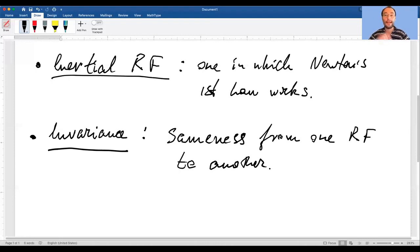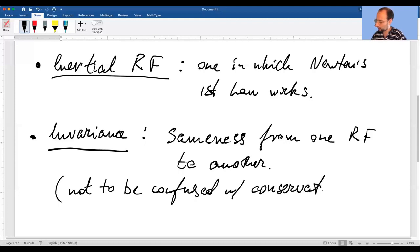Just a word of warning: invariance should not be confused with conservation. Invariance refers to something not changing from one frame to another, whereas conservation refers to something not changing from one moment of time to another. So not to be confused with conservation. Conservation is sameness from t1 to t2.